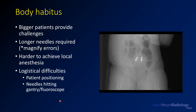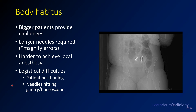Another major factor we commonly see is the increasing size of patients. The larger a patient is, the bigger the challenge. You have to use a longer needle, which tends to magnify errors — a smaller variation in angle puts you further from your target. It can be harder to achieve local anesthesia, and the needle in the procedure kit may not even be long enough to reach the muscular fascia. You also have logistical difficulties including getting the patient on the table and the needle hitting the gantry or fluoroscope.